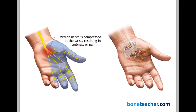When this happens to the median nerve in the carpal tunnel, we call it carpal tunnel syndrome. The patient complains of pain and paresthesias over the distribution of the median nerve in the hand — the lateral one, two, three, and a half fingers. This pain is usually nocturnal; the patient is woken up in the middle of the night with burning pain, tingling, and numbness.